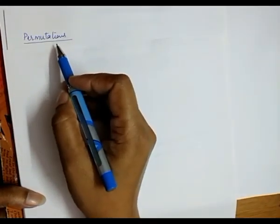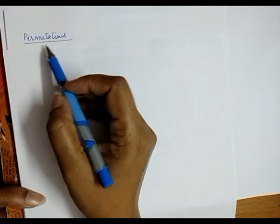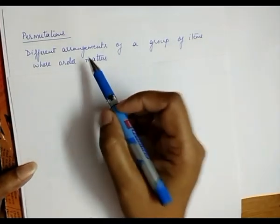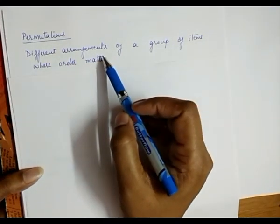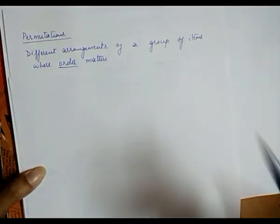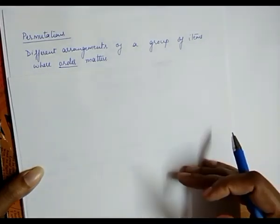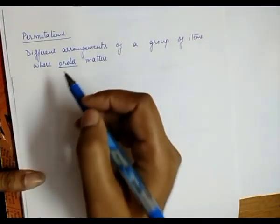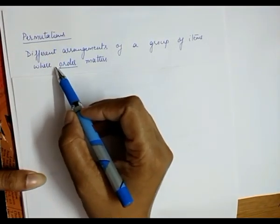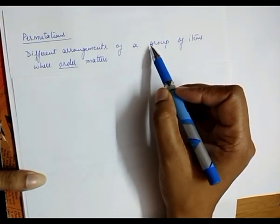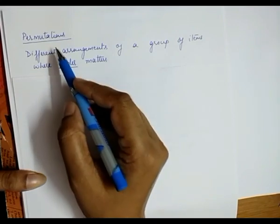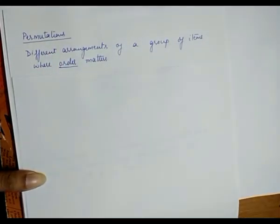We will take two or three examples to see how we solve permutation problems. First, let's discuss what a permutation is. It is a different arrangement of a group of items where order matters. The key thing to remember is that whenever we make an arrangement of items in which order matters, we use permutation.